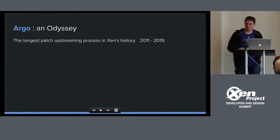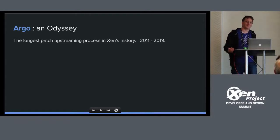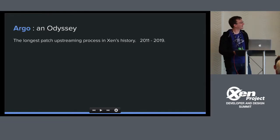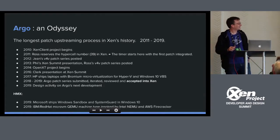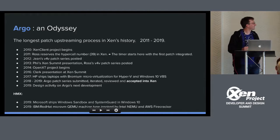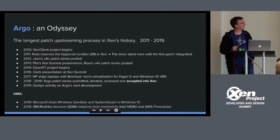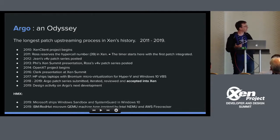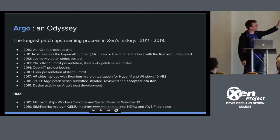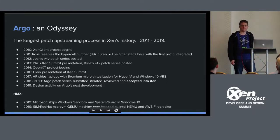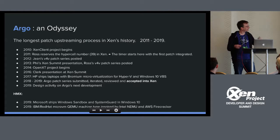Argo is actually the longest patch upstreamed in Xen's history, taking eight years as far as I'm able to tell. Xen Client starts in 2010 and V4V, the original version, was developed to meet the requirements of not wanting the network stack to be necessarily involved in your inter-VM communication. 2011 is when I think the clock starts — that's when Ross reserved hypercall number 39 in Xen. John produced several iterations of the patch series and V4V was submitted to the Xen mailing list.